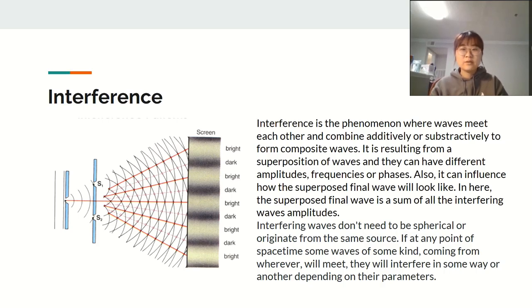Interference is the phenomenon where waves meet each other and combine additively or subtractively to form composite waves. It is resulting from a superposition of waves and they can have different amplitudes, frequencies, or phases.